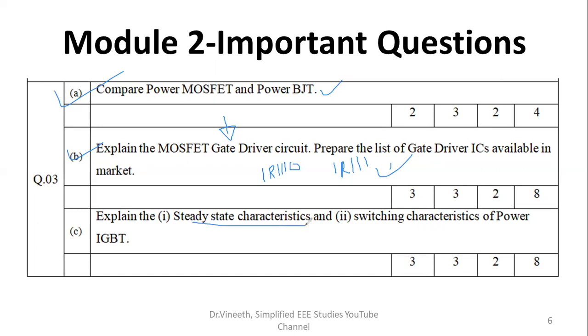Explain the steady state characteristics and the switching characteristics of power MOSFET. Five marks for steady state characteristics. Another five marks for the switching characteristics. In the switching characteristics, you need to mention about different type of losses. In the steady state characteristics, you have to mention about input and output characteristics very clearly. So, ID versus VDS. If it is IGBT, then it is different. If it is MOSFET, then terminals will be different. That you have to be very much careful.